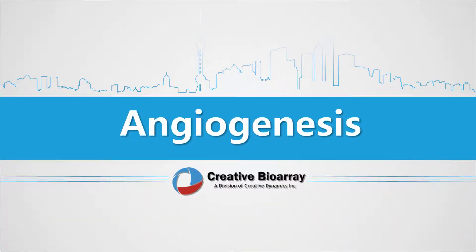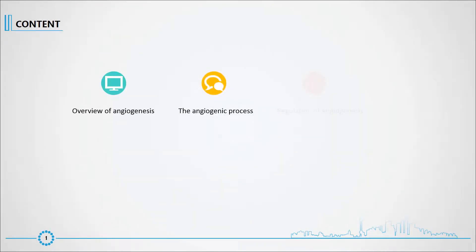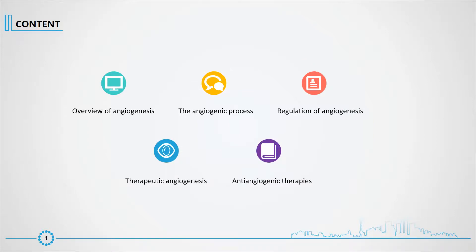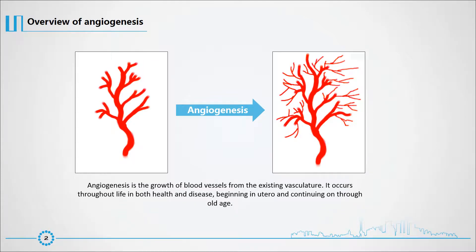Angiogenesis is the physiological process through which new blood vessels form from pre-existing vessels. It is the growth of blood vessels from the existing vasculature, occurring throughout life in both health and disease, beginning in utero and continuing on through old age.